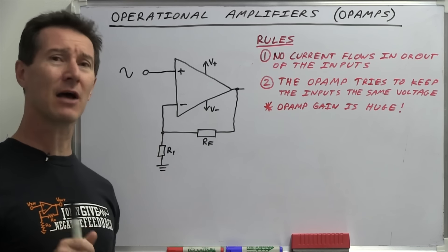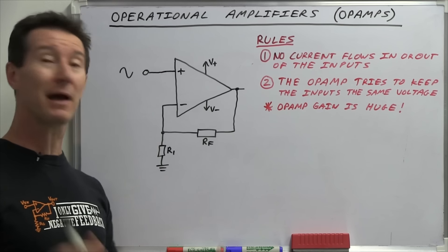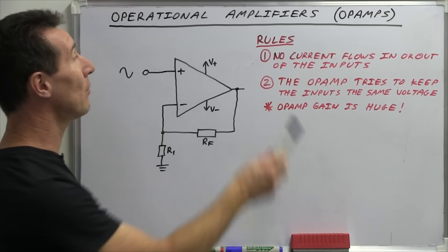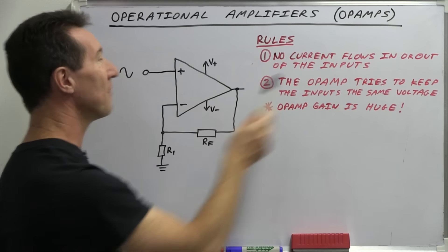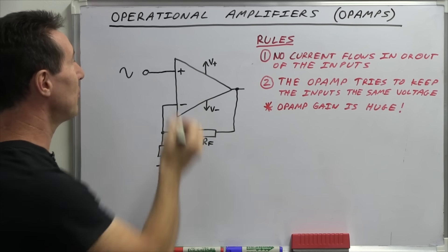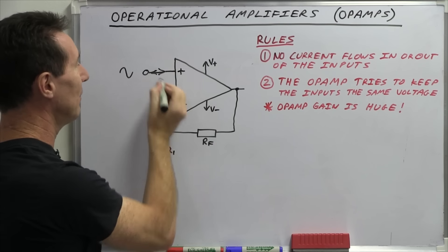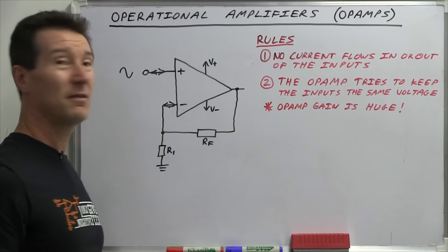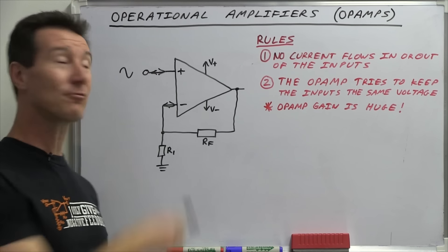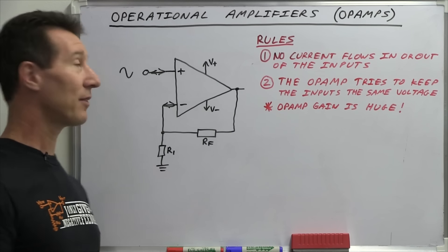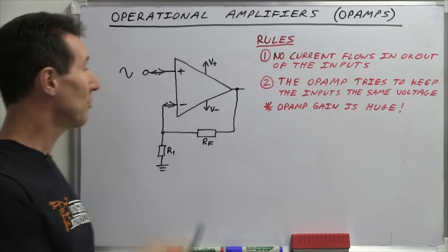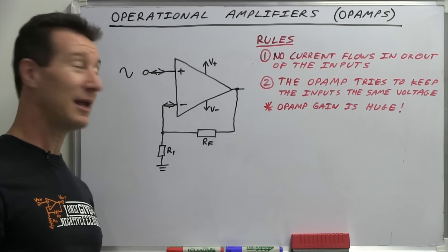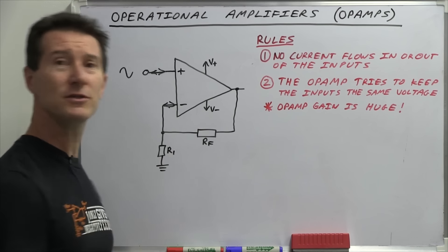You can look at a schematic and understand how it works. The two rules are very simple. Rule number one: no current flows in or out of these inputs. So there's nothing flowing in or out of these two input pins, ever. Nothing flows in or out, regardless of how you connect this circuit up — whether it was the open-loop comparator configuration or whether it's a closed-loop configuration, an inverting or non-inverting amplifier.